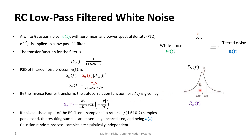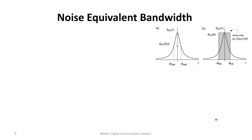The power spectral density of the RC filter output is sketched, and the autocorrelation function shows that all samples are correlated but approach zero beyond a certain value. If the noise is sampled at intervals greater than approximately 4.61RC (roughly five time constants), the samples become effectively uncorrelated — and since they are Gaussian, they are also statistically independent.